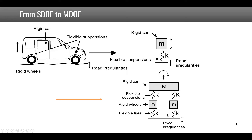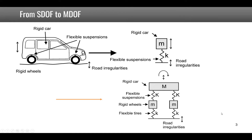In this case, you now have the possibility to have both the vertical motion and the rotation of the body of the car. Another example is buildings: if you stack different levels on top of each other, you can replace the system by a set of masses and springs where the stiffness represents the flexibility of the columns and the mass is the mass of each rigid floor. You will have as many masses and stiffnesses as there are degrees of freedom — as there are levels in the building.